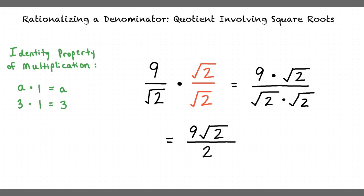This means that our final answer is 9√2 over 2. We can see that there is no longer a square root in our denominator. Instead, we have an integer in our denominator, meaning that our denominator is rationalized.